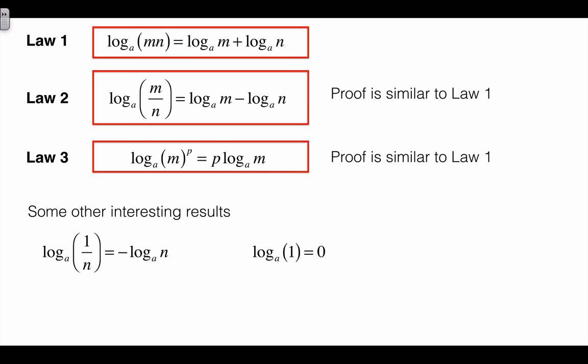That leads to a couple of interesting results: log to the base a of (1/n) is minus log to the base a of n. That comes from the index laws where a^(-n) is 1/a^n. And log to the base a of 1 is zero. That was covered in our other lessons on the definitions of logs, and it's because a^0 is 1.